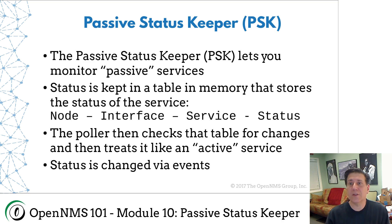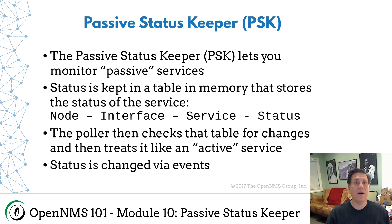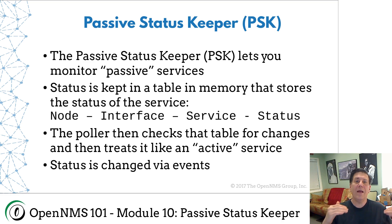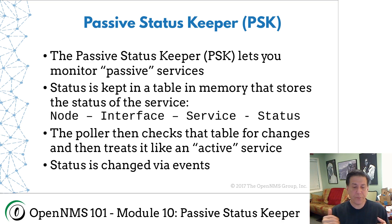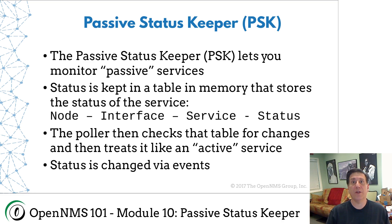Basically the way it works is quite simple. There's a table in memory, and on that table there is a node, an interface, a service, and whether it's up or down — just those four things, one per entry. When OpenNMS starts up, it goes through its configuration in the database and says, 'These nodes and interfaces have these Passive Services.' It adds them to this table in memory and sets the status to up. Then it looks in the outage table and asks: do any of these Passive Services have an active outage? If so, the status of those services is marked down.